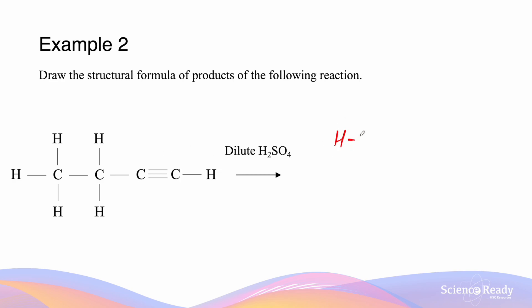So our ketone will look like this. And remember that the ketone is going to be the major product. The minor product will be the aldehyde. And these are the two products that we can draw as a result of this hydration reaction.